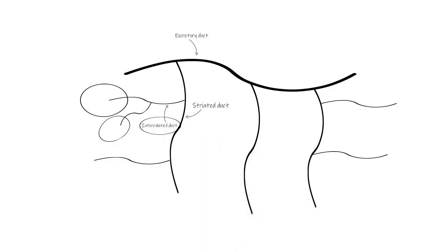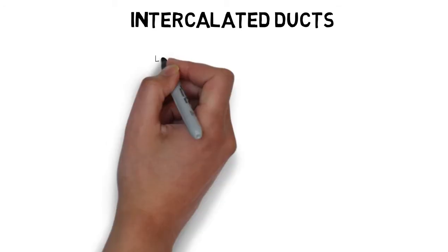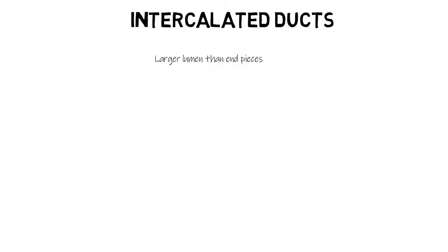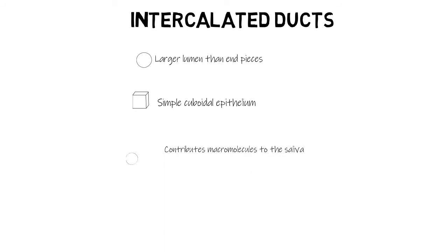The first ductal type is the intercalated ducts. The lumen of these ducts is continuous with that of the lumen of the end piece, so the overall lumen size of the intercalated duct is larger than that of the end pieces. These ducts are lined by simple cuboidal epithelium, and the ductal cells also have typical cellular organelles.